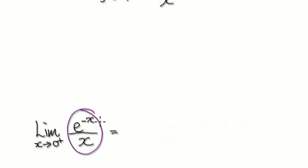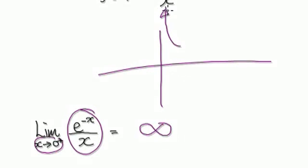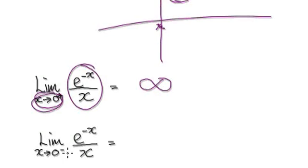The limit of this function as x approaches zero from the right-hand side is going to head towards positive infinity. So we know our graph will shoot up as x equals zero is approached from the right.